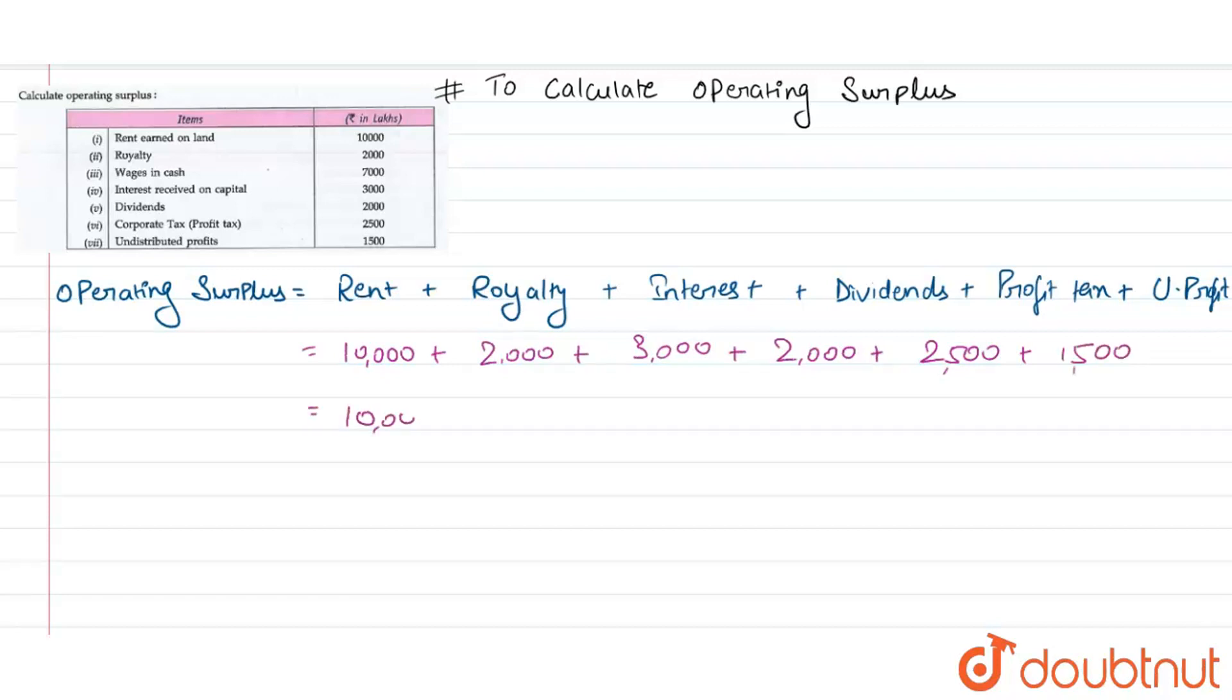This becomes 17,000 Lakhs plus 4,000, which is 21,000 Lakhs. Hence, 21,000 Lakhs is our operating surplus.